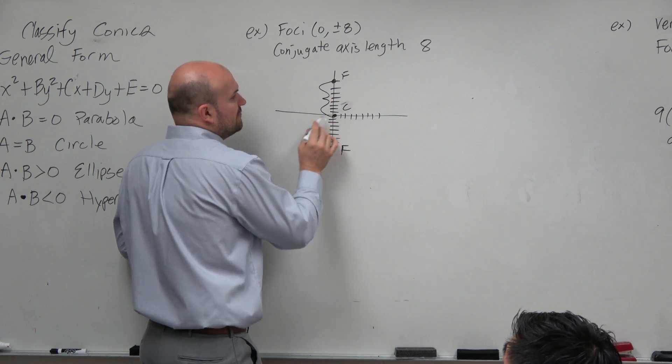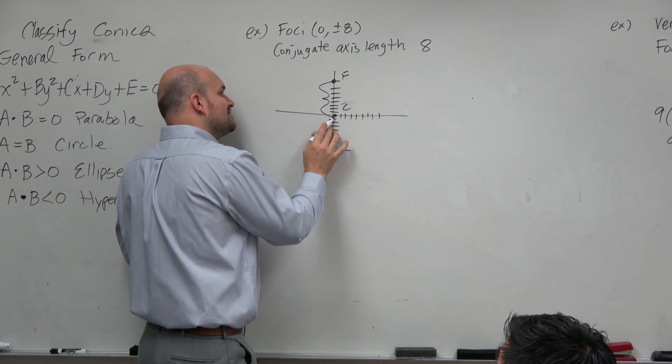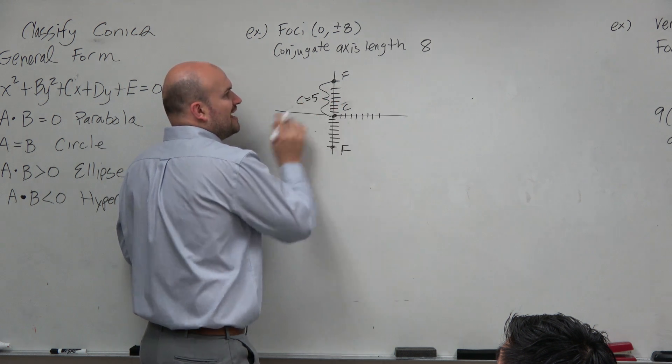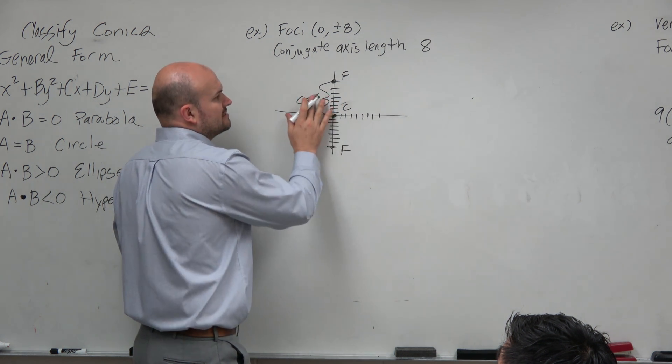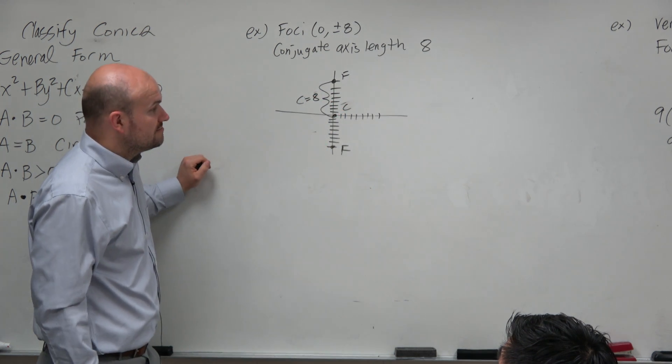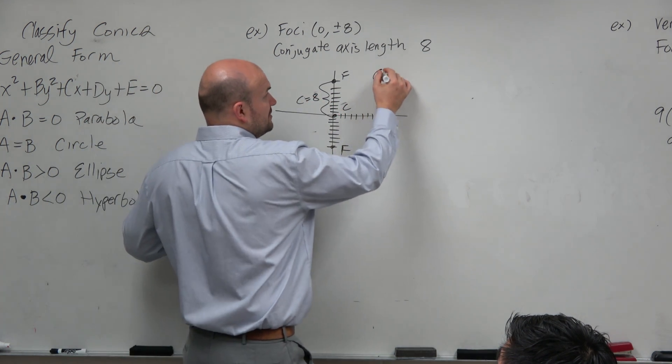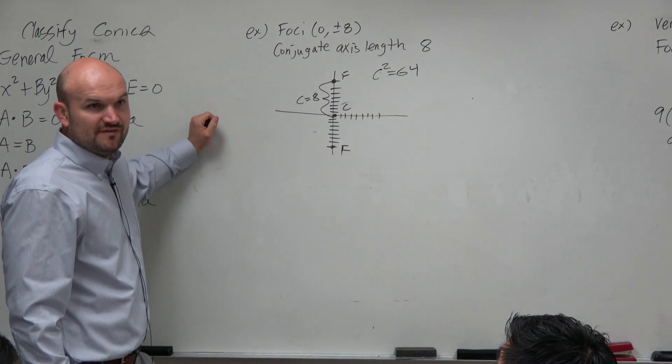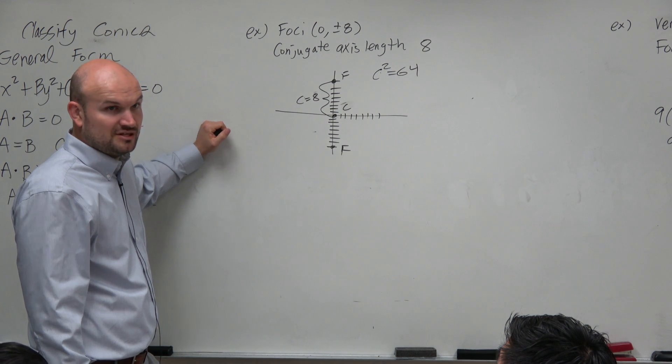Now, again, remember the distance from center to your foci is going to equal c, which is equal to 5. 8. I don't know where 5 came from. That's equal to 8. So if we know c is equal to 8, then we know c squared is equal to 64. Just from one piece of information, just by plotting this, I'm able to figure out all this information. It's quite a bit.